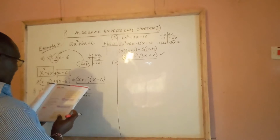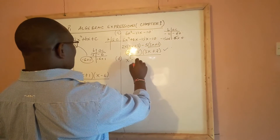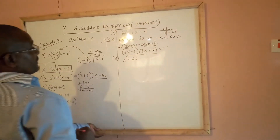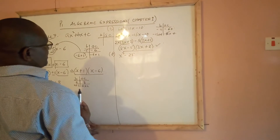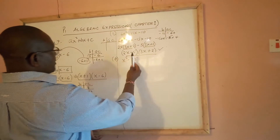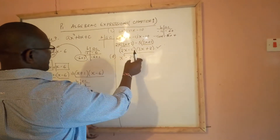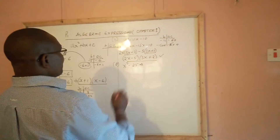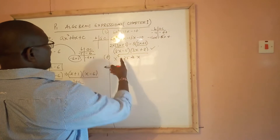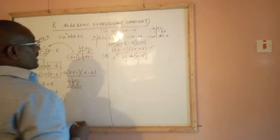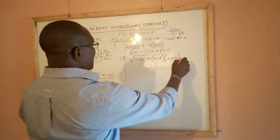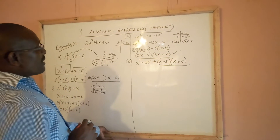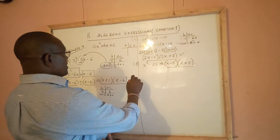Part d is x squared minus 25. This is a perfect example of difference of two squares: x squared is the square of x, and 25 is the square of 5. Taking their square roots, we get one bracket (x minus 5) and the same bracket repeated with the opposite sign (x plus 5). That has been completely factorized. There is also a longer method which will be shown after part e.